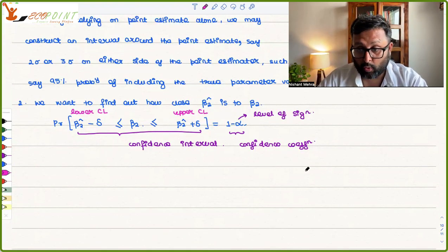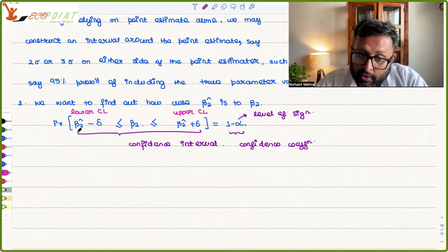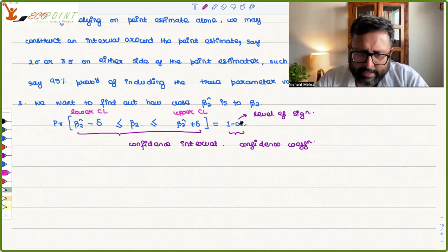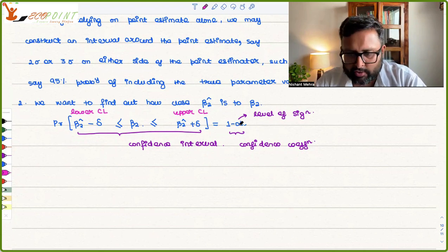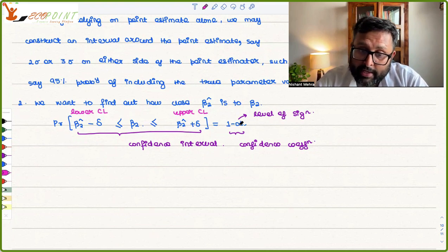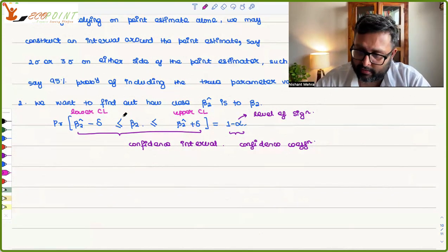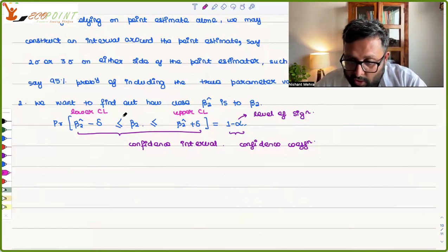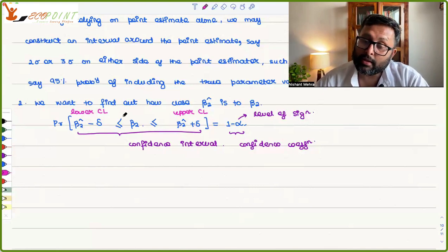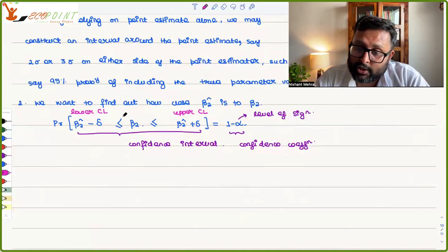Note that what we are not saying is very important. We are not saying that this particular interval — say beta 2 hat is 0.3 and delta is 0.1, so the interval is (0.2, 0.4) — we are not saying that the true value of beta 2 will lie in this particular interval with probability 1 minus alpha. What we are saying is that in long-run repeated sampling, the probability that we can create such an interval which would include the true beta 2 is 1 minus alpha.